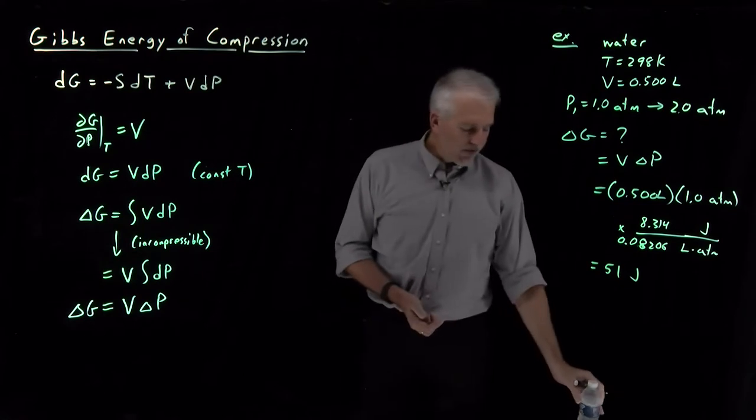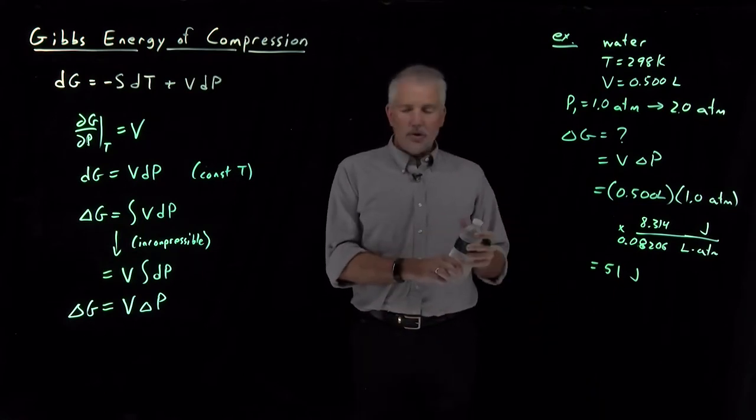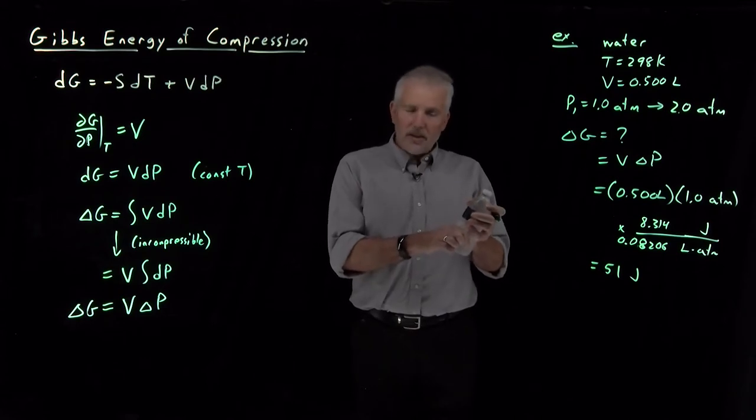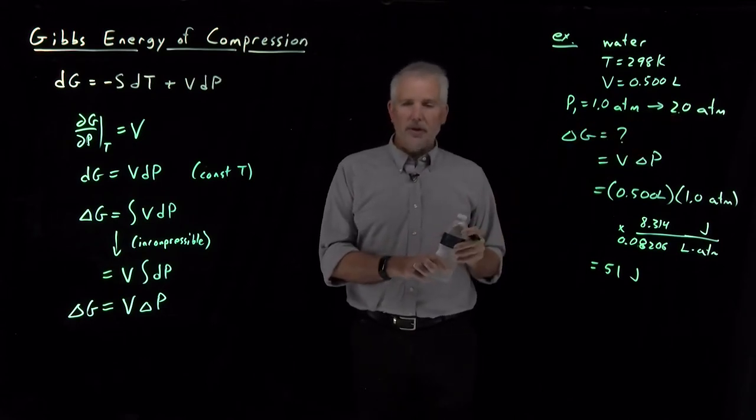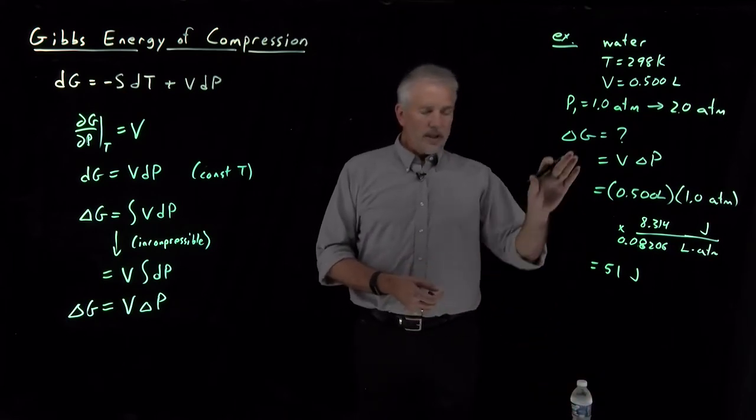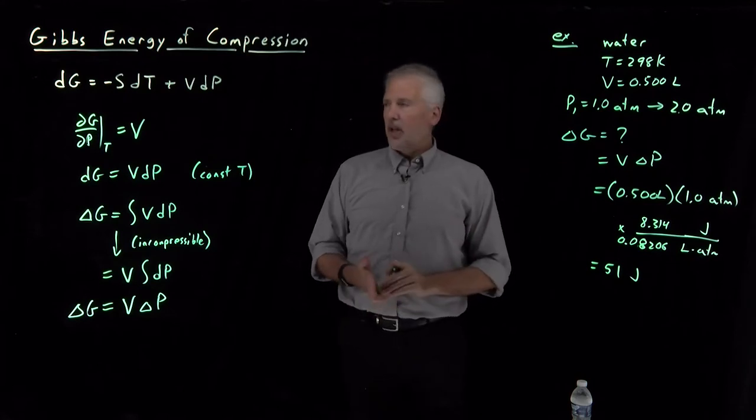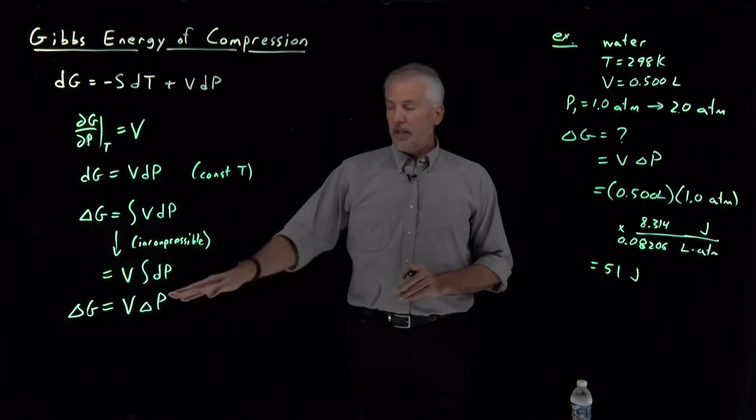So what we've been able to figure out is that I've raised the free energy of the water in this bottle by 51 joules when I squeeze on it and exert a pressure of two atmospheres rather than just the one atmosphere that the room's air is pressing on the bottle with right now. So we can calculate the Gibbs free energy change when I compress, when I increase the pressure on an object if it's incompressible.